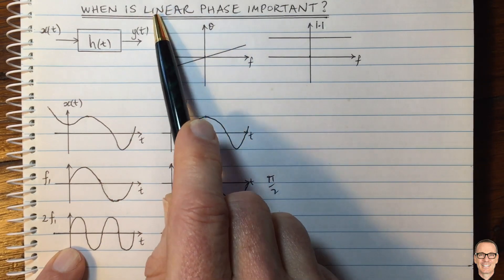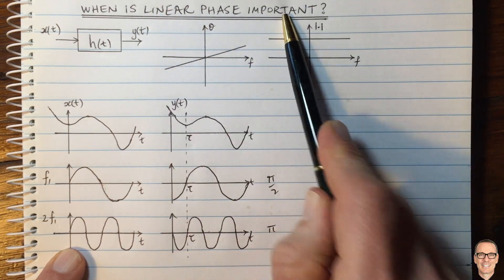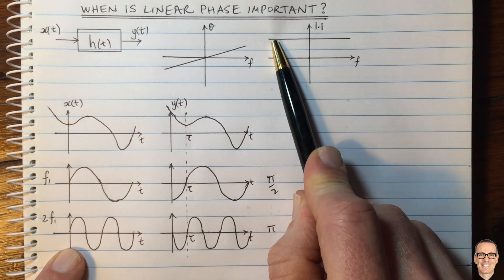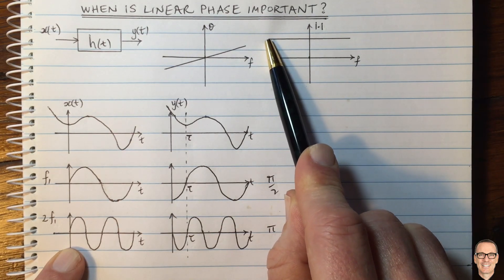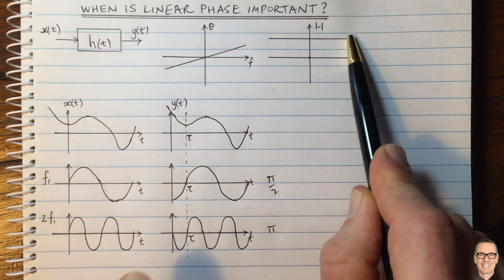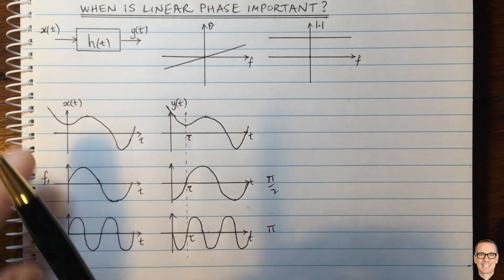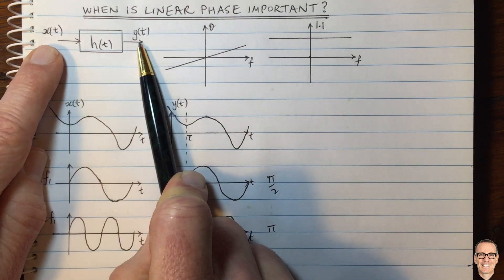So now when is it important to have linear phase? Well, I think clearly you can see the most common case where it's important is an amplifier. So instead of having a constant gain of 1, which is what I've drawn here, in an amplifier we want to take a signal and make it louder.